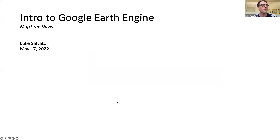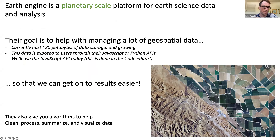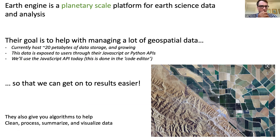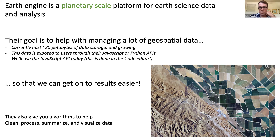Earth Engine is a cloud-based software that allows you to do earth science data analysis at the planet scale. They're hosting almost 20 petabytes of data on their servers and you can access and work with this data through their APIs, which can be done in JavaScript or Python. It's a little easier in JavaScript, and we'll use that today. You can compute algorithms, process data, and make visualizations in Google Earth Engine.